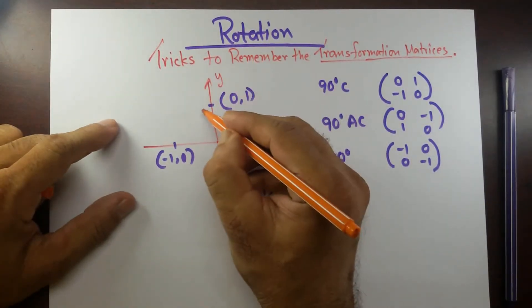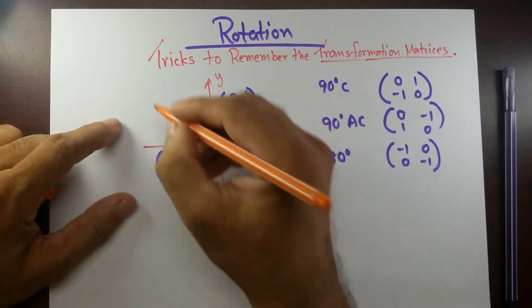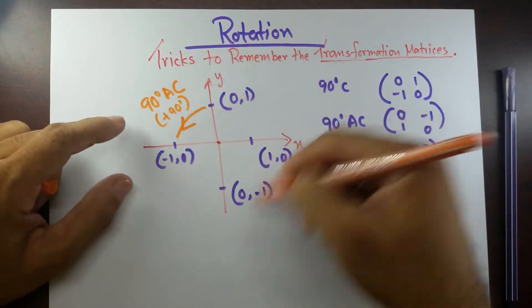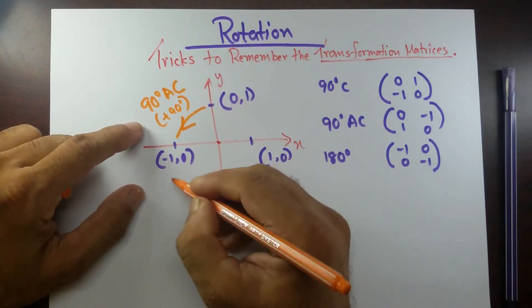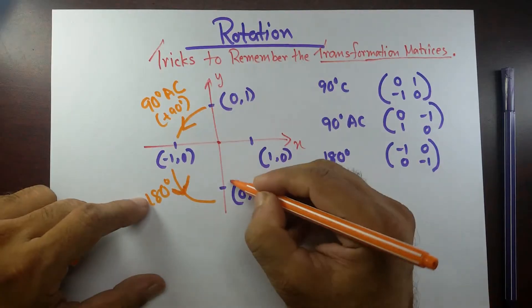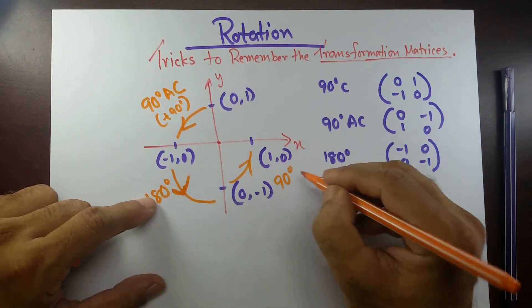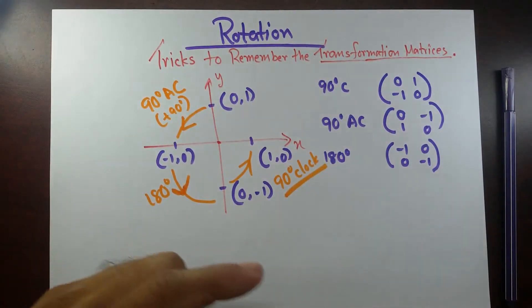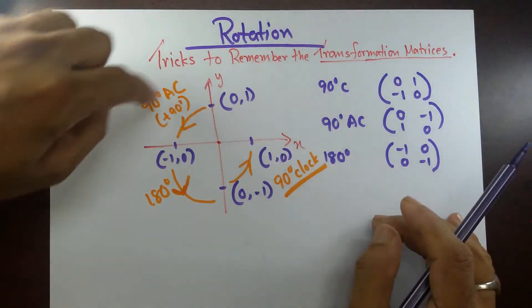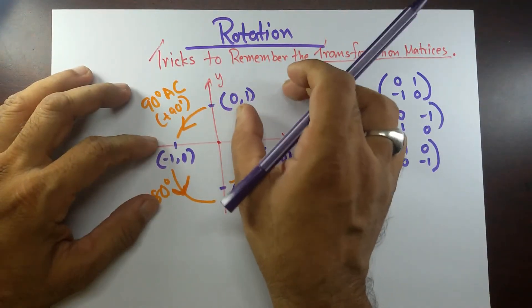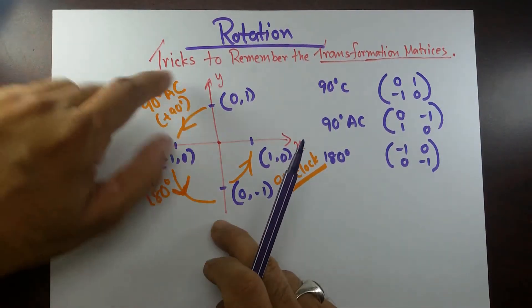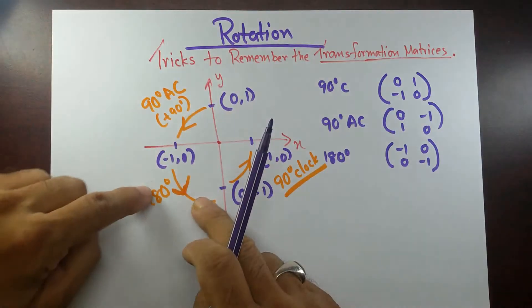Now for rotation, go anti-clockwise. We say it's 90 degree anti-clockwise, or positive 90 degree, because whenever it's going anti-clockwise we call it positive rotation. Going halfway around is 180 degree. And going clockwise from the starting point to the fourth quadrant, we call it 90 degree clockwise. It's 180 degree either way you come around.